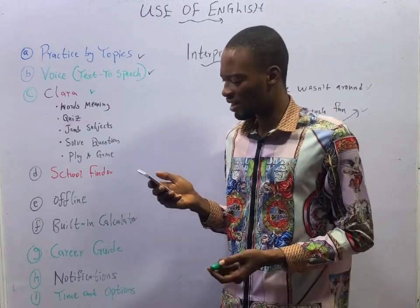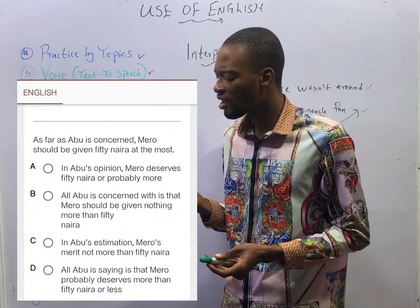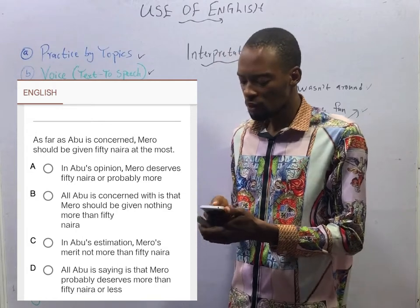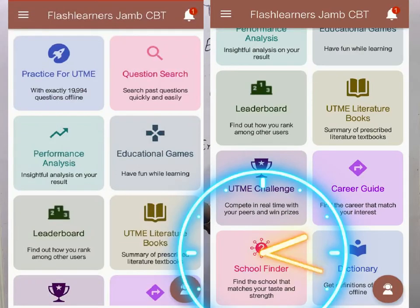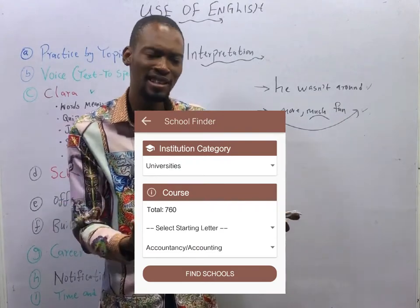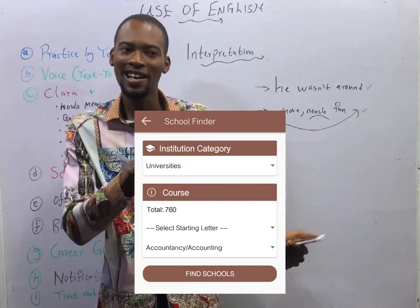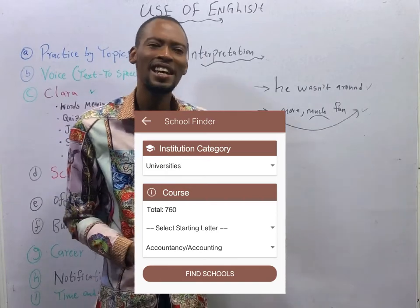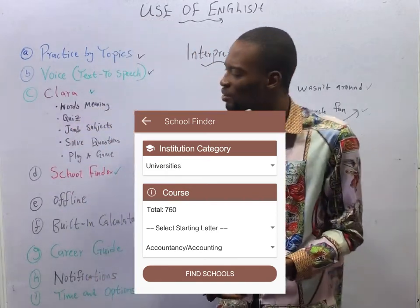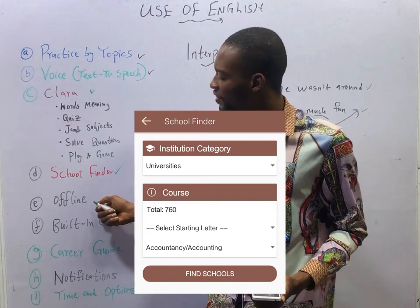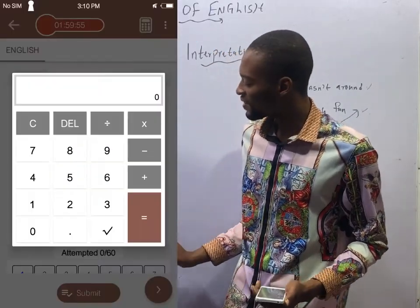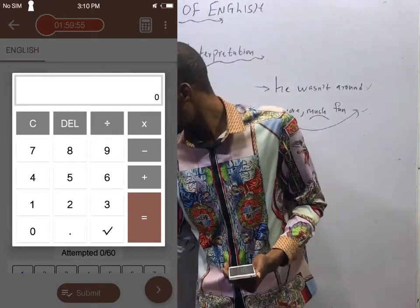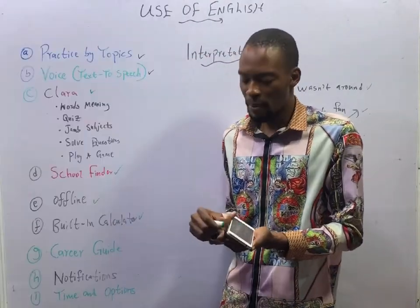The next question: as far as Abu is concerned, Mero should be given 15 Naira at most. In the Flash Nenas Jam app, you can also use the School Finder — choose any school and see all the courses they offer, their subject combination, whether they accept two sittings or one sitting, and everything offline. There is also a calculator to solve questions, and a Career Guide.